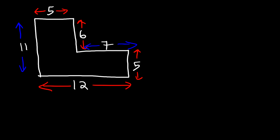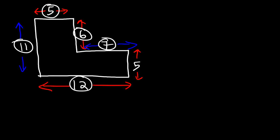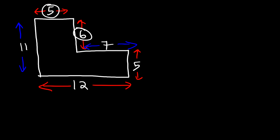We just have to add up all the numbers. So it's going to be 5 plus 6, which is 11, plus 7, that's 18. 18 plus 12 is 30. 30 plus 11, that's 41. Plus 5 is 46. So therefore, the perimeter of this figure is 46 units.